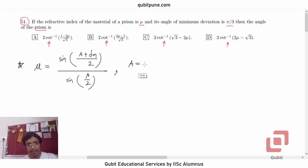What is A? A is the angle of prism. We want to determine that for the given prism, and δₘ is the angle of minimum deviation.